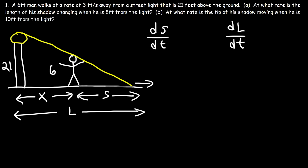So make sure you understand that. So dS/dt tells you the rate at which the length of the shadow is changing. But dL/dt tells you the rate at which the tip of the shadow is moving. So how can we calculate dS/dt? Let's start with that one first. What do we need to do in order to find it? Now for this problem, you need to draw similar triangles.